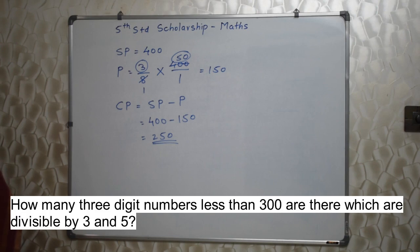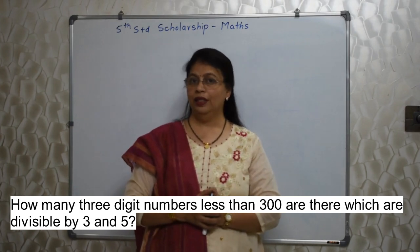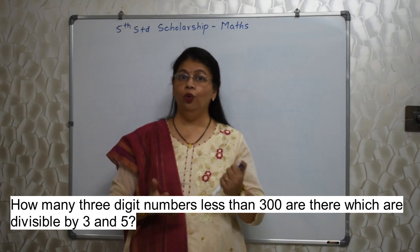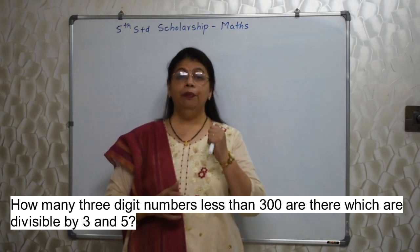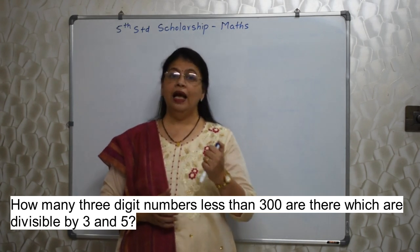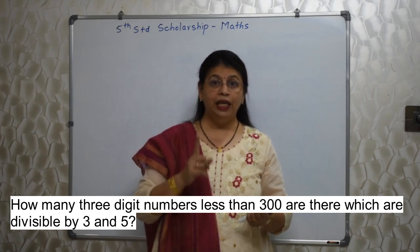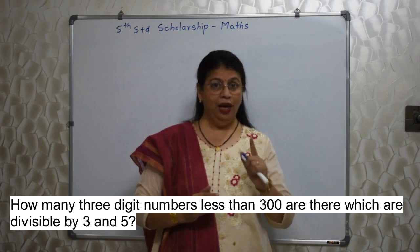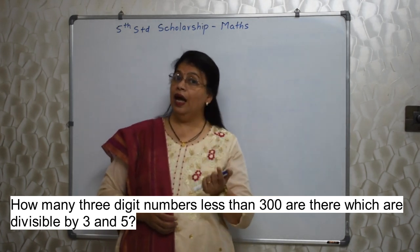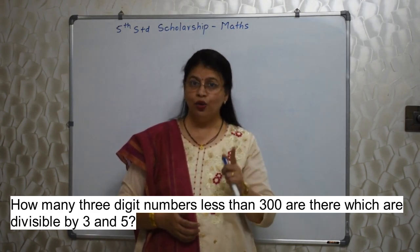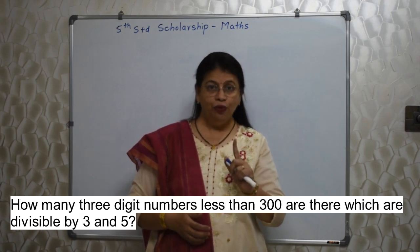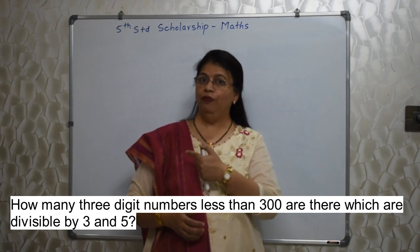Next: how many three-digit numbers less than 300 are there which are divisible by 3 and 5? Read the sum properly — 3 and 5 means both. 3 and 5 are co-prime numbers because they do not have any factor common, so we must find the LCM of 3 and 5. Since they are co-prime, their LCM is their product: 3 × 5 = 15. Also note: 300 is also a three-digit number — they want up to 299 only. 300 is also a multiple of 15, so please be careful there.